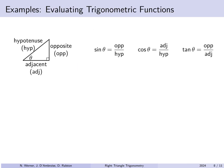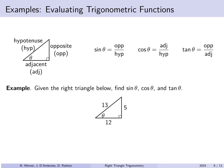Given a triangle with side lengths 5, 12, and 13, find sine theta, cos theta, and tan theta. Sine theta is opposite over hypotenuse: the side across from theta is 5 and the hypotenuse is 13, so sine theta equals 5 over 13. Cosine theta is adjacent over hypotenuse, which is 12 over 13. Tangent theta is opposite over adjacent, which is 5 over 12.